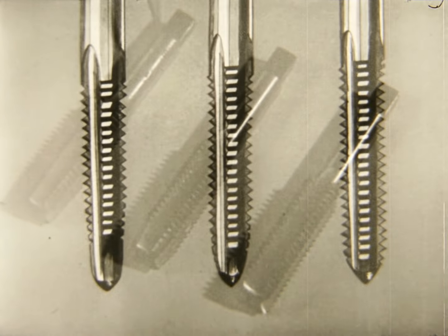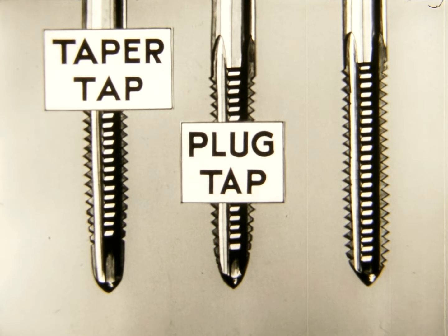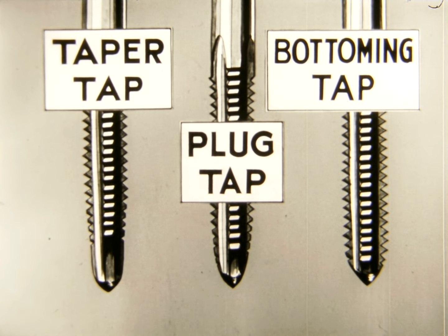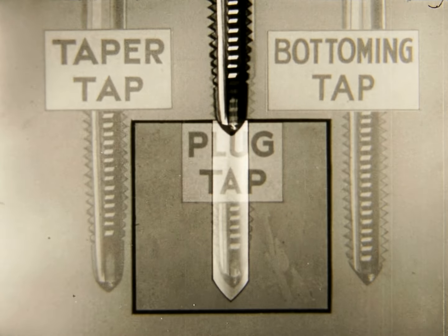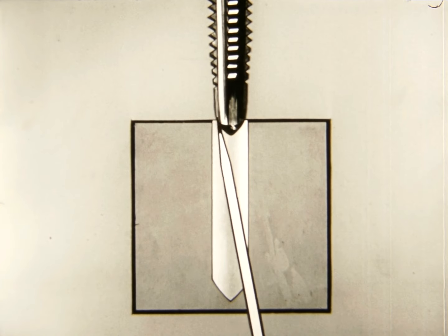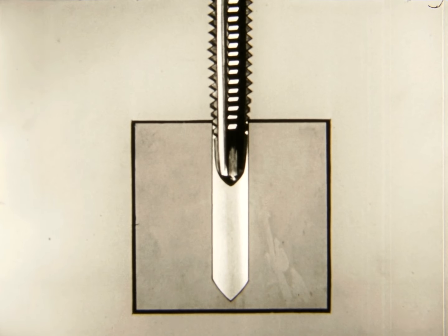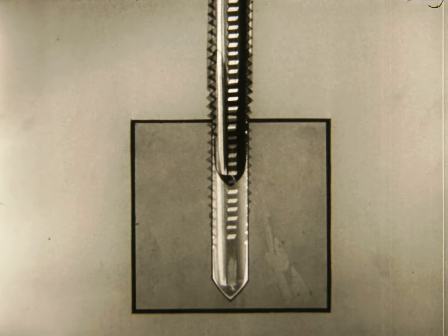Taps always come in sets of three, known as taper tap, plug tap, and bottoming tap. The taper tap has a long taper from the tip to a full size thread. This tip helps to guide the tap straight in the hole. This is the first tap used in hand threading a hole.